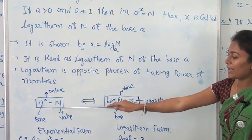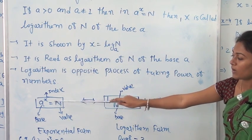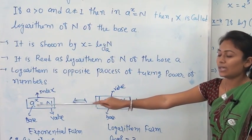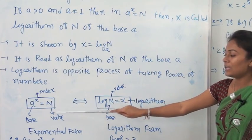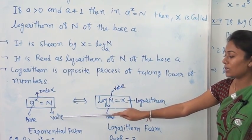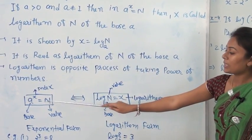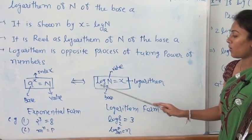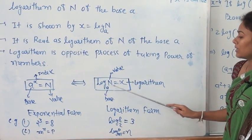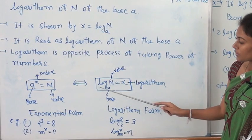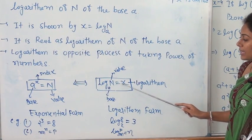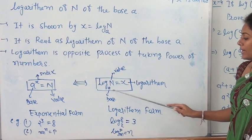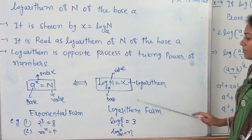In the exponential form a raised to x equal to N, x is known as the index, a is known as the base, and N is known as the value. The equivalent logarithm form is log N base a equal to x, where N is the value, a is the base, and x is the logarithm.